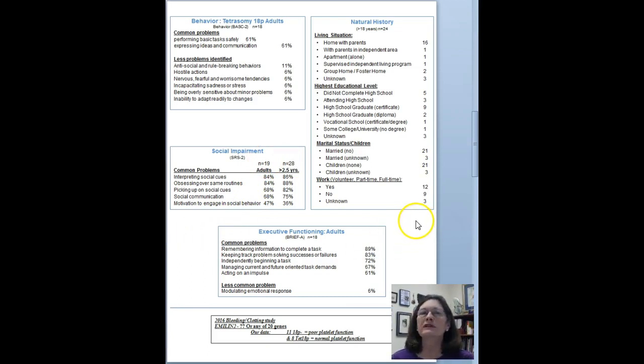As far as natural history, shown over to the right, again, this is in those over 18 years of age. I think it's self-explanatory. In that case, we have information on 24 individuals, so it's a pretty good-sized group for such a rare condition.